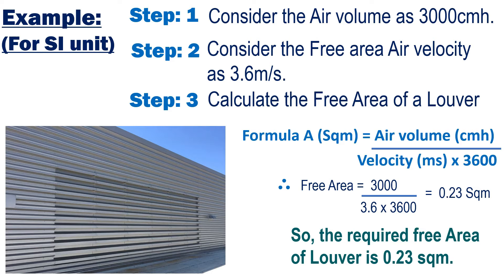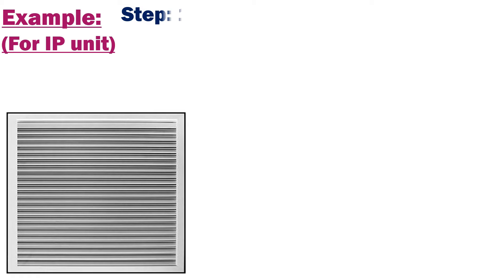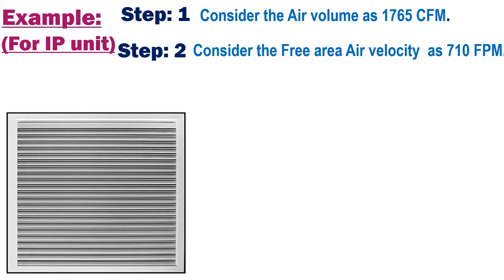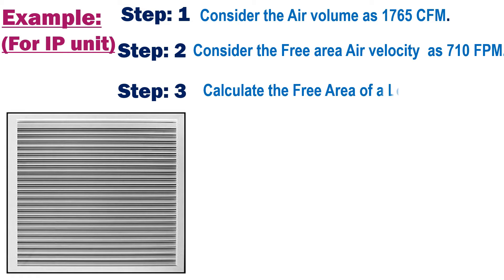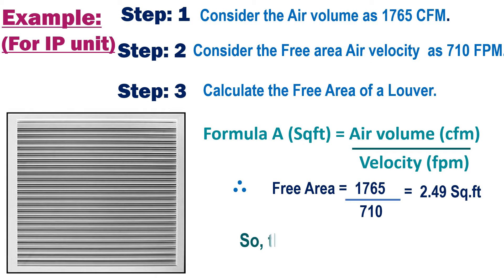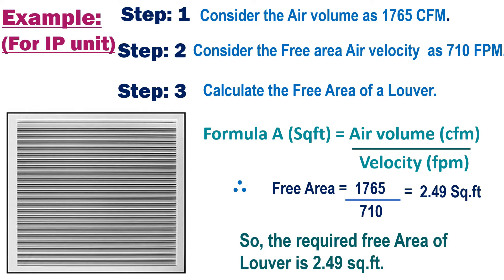Now go through an example for IP units. Step 1: consider the air volume as 1765 cubic feet per minute. Step 2: consider the free area air velocity as 710 feet per minute. Step 3: calculate the free area of the louver. The formula is: Free Area (ft²) = Air Volume (CFM) ÷ Velocity (FPM). Therefore, Free Area = 1765 ÷ 710 = 2.49 square feet.